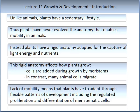An observation that is perhaps quite obvious about plants is that they don't move around — they don't get up and walk and they don't run, unlike animals. Therefore, unlike animals, they have never evolved anatomy that enables mobility. Instead, plants have evolved a rigid anatomy which is adapted for the capture of light energy and nutrients. The rigidity of the anatomy affects how the plant can grow. Cells are added during growth by meristems; in contrast, many animal cells migrate. The lack of mobility means that plants have to adapt through flexible patterns of development, including the regulated proliferation and differentiation of meristematic cells.